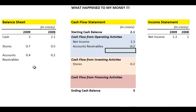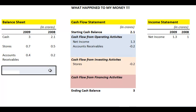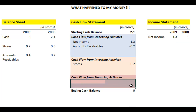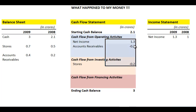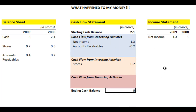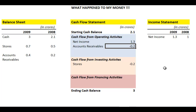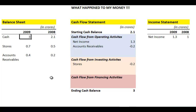There is a financing activities column, but this balance sheet has no loans and this income statement has no interest expense, so there is no cash flow from financing activities. Now let's see if everything reconciles: 2.1 crores starting cash, plus 1.3 crores net income gives 3.4 crores, subtract 20 lakhs for stores gives 3.2 crores, subtract another 20 lakhs for accounts receivable gives exactly 3 crores — the ending cash balance for 2009. That is your simple cash flow statement.